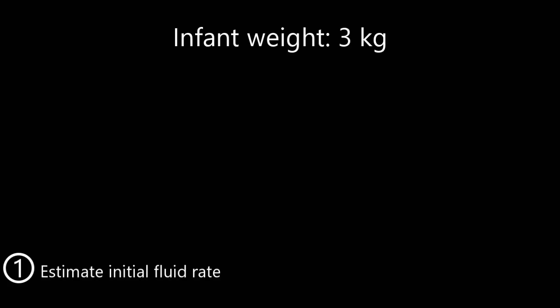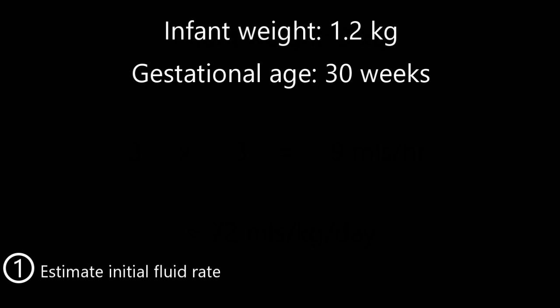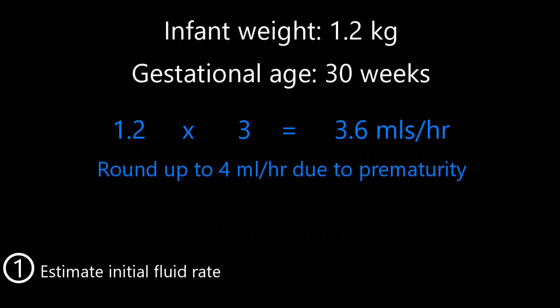Let's go over a couple of examples. You admit a three kilo baby — three times three is nine, so you run it at nine mL an hour, which is about 72 mL per kilo per day. Another example: you've just admitted a 30-week, 1.2 kilo baby. 1.2 times three is 3.6 mL an hour. But you may want to give a little bit more for a preemie baby, so you round it up to four mL an hour, which gives 80 mL per kilo per day — pretty much right where you'd want it.